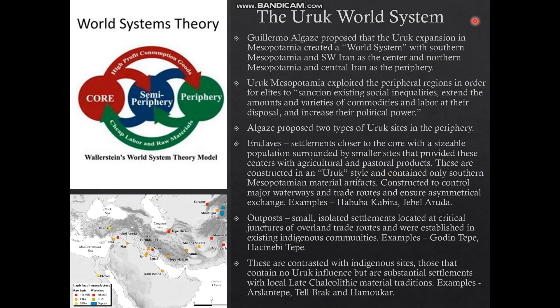Because of that, Guillermo Algaze adopted Emmanuel Wallerstein's explanations for the capitalist world system to talk about an Uruk world system, in which southern Mesopotamia and the regional centers in southwestern Iran showed cultural supremacy, hegemony, or even expressed military power over the northern peripheral regions of northern Mesopotamia. Algaze basically sees this as a system where Uruk Mesopotamia exploited these peripheral regions so that elites could sanction existing social inequalities, extend the amounts and varieties of commodities and labor at their disposal, and increase their political power.